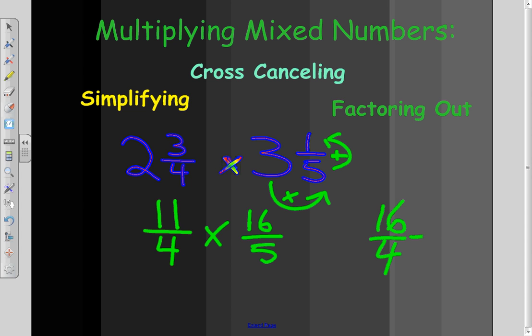and say, I'm going to divide by 4 over 4, and this would be equal to 4 over 1, or 4 wholes,